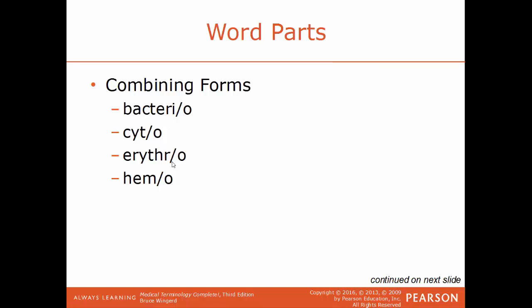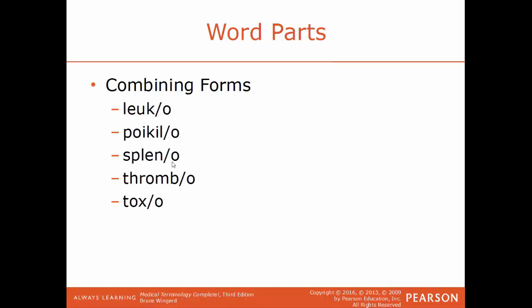Some combining forms: bacterio refers to bacteria. Cyto or cyte refers to cell. Erythro refers to red. Hemo refers to blood. Leuco refers to white. Poecilo refers to irregular or varied. Spleno refers to the spleen. Thrombo refers to a clot. Toxo refers to poison.